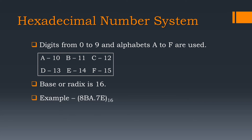Finally, we have hexadecimal number system. In this system, total 16 digits are used. Firstly, we have digits from 0 to 9, and for 10 to 15, alphabets capital A to F are used, where capital A denotes 10, B denotes 11, and so on. The base of this number system is 16. For example, 8BA.7E.